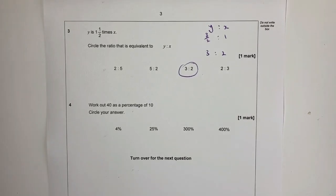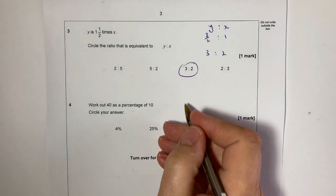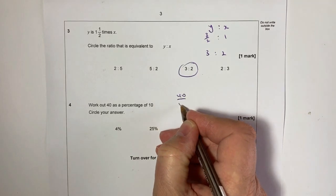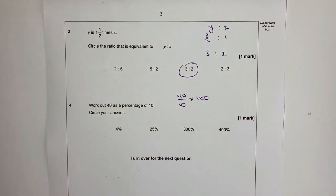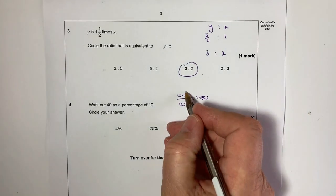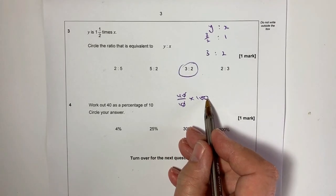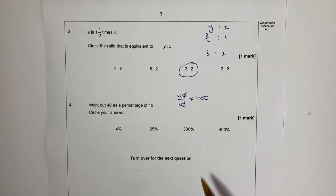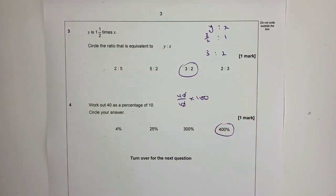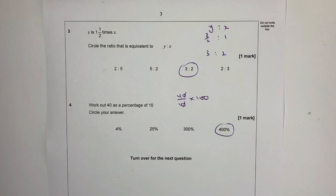Question four is also a bit tricky because we're not used to thinking about percentages over and above 100%. In this particular case, we're being asked to work out 40 as a percentage of 10. So 40 out of 10 multiplied by 100. I would just simply knock off these two zeros, divide top and bottom by 10, and I've got four times 100 which is 400 divided by one. So my answer is going to be 400.